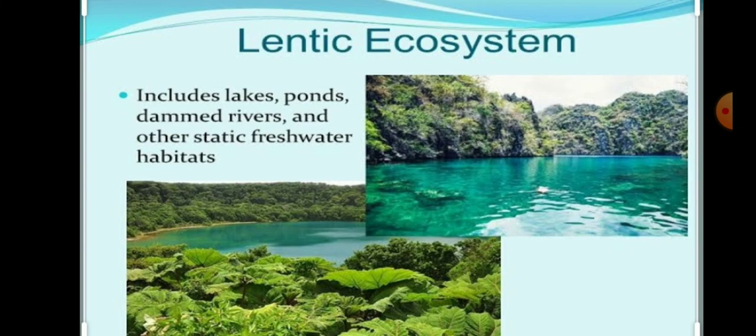Now the third type is called lentic biomes. These are the kind of ecosystem that supports both aquatic and terrestrial life forms, such as swamps.